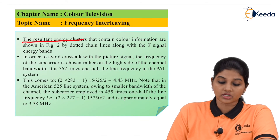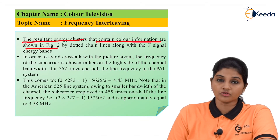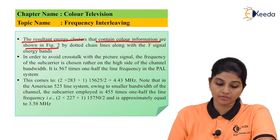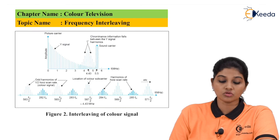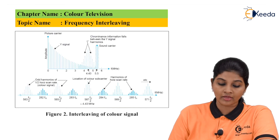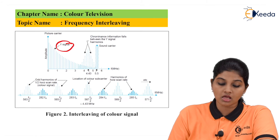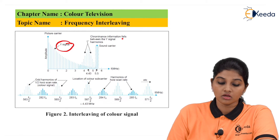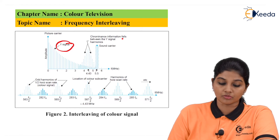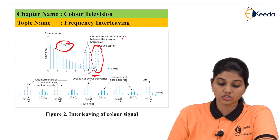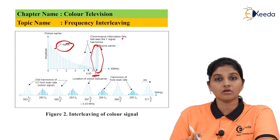The resultant energy clusters that contain color information are shown in the figure, which plots picture carrier amplitude versus frequency. The chrominance signal — the Y signal — is present, and the dotted line represents the chrominance information falling between the Y signal harmonics. The sound carrier is present at 5.5 MHz, forming the composite video signal.